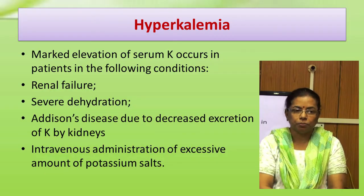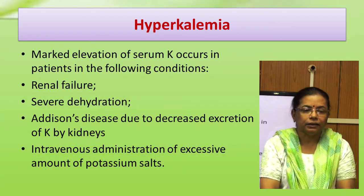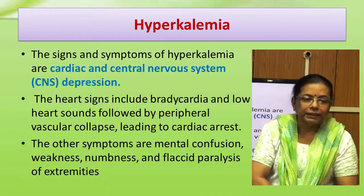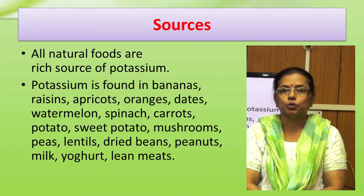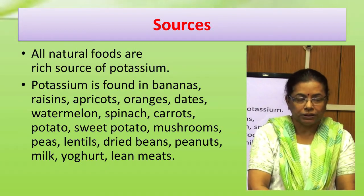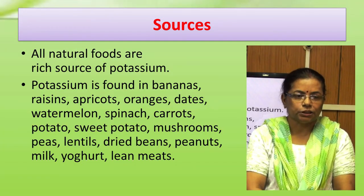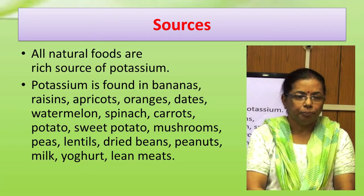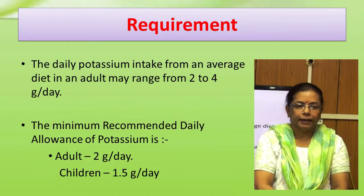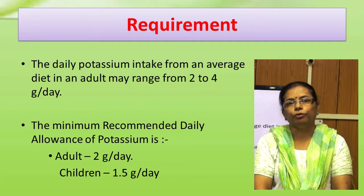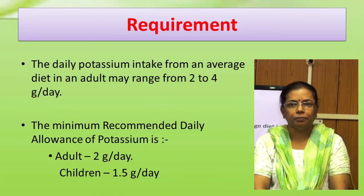Hyperkalemia, that is marked elevation of serum potassium, may occur in conditions like renal failure, severe dehydration, Addison's disease, and intravenous administration of excessive amounts of potassium salts. The signs and symptoms include cardiac and central nervous system depression. All natural foods are rich sources of potassium; foods with particularly high amounts include banana, raisins, apricots, oranges, dates, watermelon, spinach, carrots, potatoes, sweet potato, mushrooms, peas, lentils, dried beans, peanuts, milk, yogurt, and lean meats. Daily potassium intake from an average diet ranges from 2 to 4 g per day. The minimum RDA is 2 g per day for adults and 1.5 g per day for children.